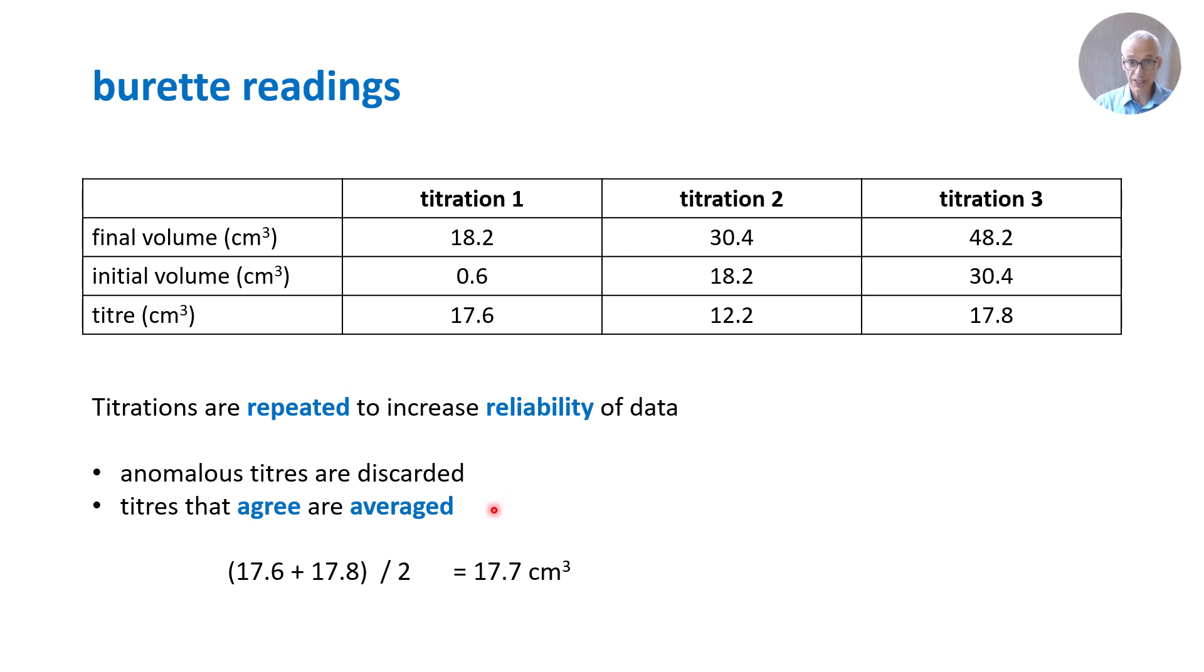To achieve the average, we average the titers, the volume delivered that agree. So 17.6 plus 17.8 divided by the number of items, two. We would say that our average volume delivered is 17.7 centimeters cubed. We've improved our accuracy and our reliability by repeating, discarding an anomalous result and then averaging those results that are in close agreement.